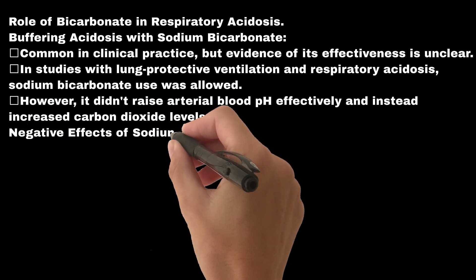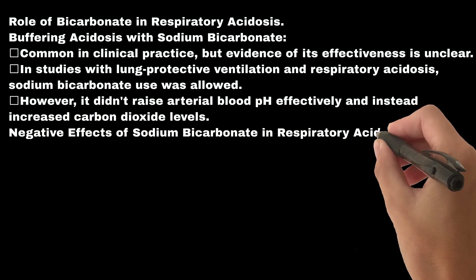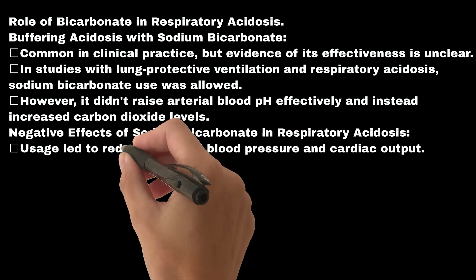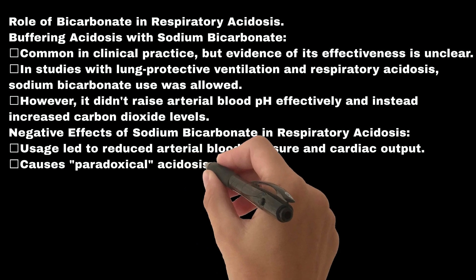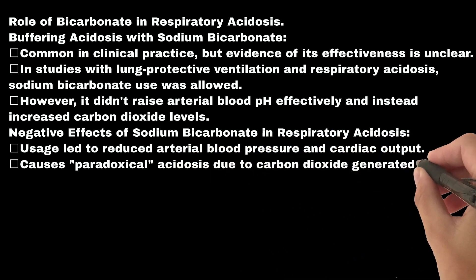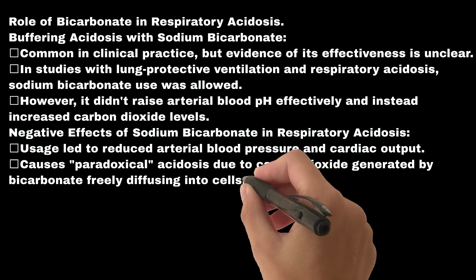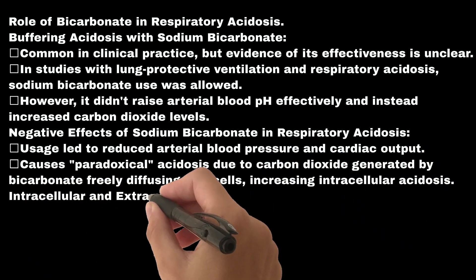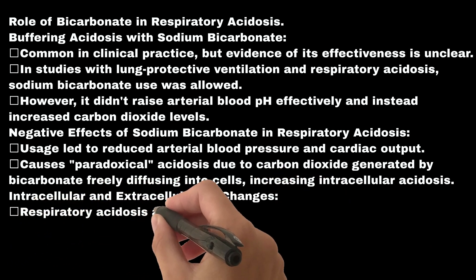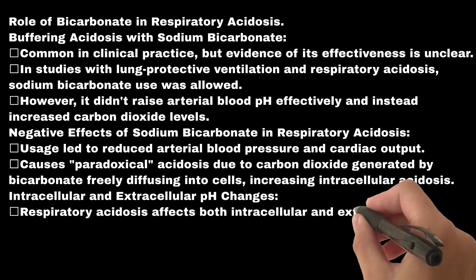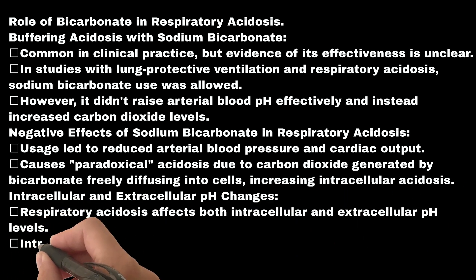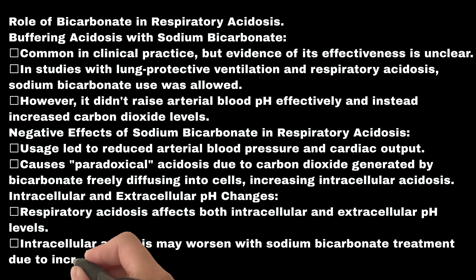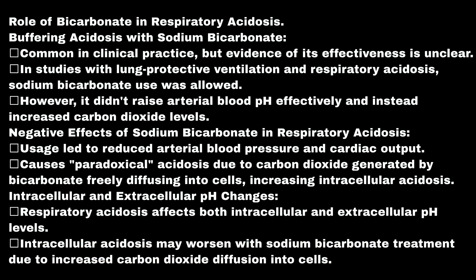Negative effects of sodium bicarbonate in respiratory acidosis: usage led to reduced arterial blood pressure and cardiac output. A paradoxical acidosis occurs due to carbon dioxide generated by bicarbonate freely diffusing into cells, increasing intracellular acidosis. Respiratory acidosis affects both intracellular and extracellular pH levels, and intracellular acidosis may worsen with sodium bicarbonate treatment due to increased carbon dioxide diffusion into cells.